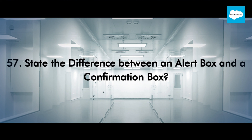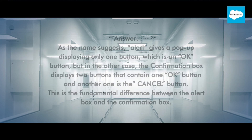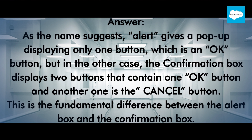State the difference between an alert box and a confirmation box. An alert box gives a pop-up displaying only one button, which is the OK button. But a confirmation box displays two buttons: one OK button and one Cancel button. This is the fundamental difference between the alert box and the confirmation box.